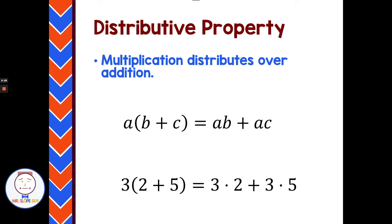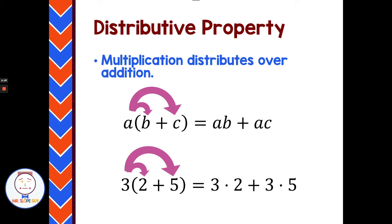The distributive property has to do with multiplication distributing over addition. That's where we have a number on the outside of the parentheses, and we multiply that to each number on the inside of the parentheses. These are easy to spot because on one side you have parentheses, and after you've used the distributive property, on the other side of the equation the parentheses are gone.